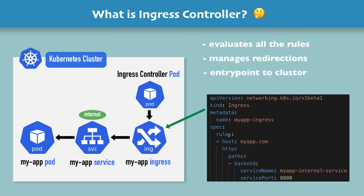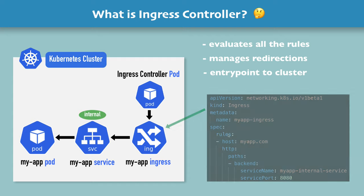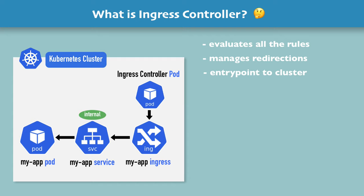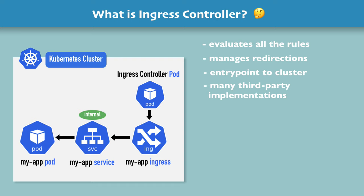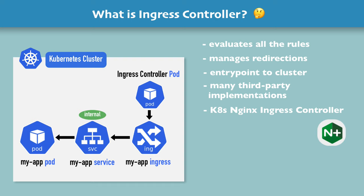It will evaluate all the rules and decide which forwarding rule applies for that specific request. To install the ingress implementation in your cluster, you have to decide which of many third-party implementations to choose from — I'll put a link to the full list in the description. There is one from Kubernetes itself, which is the Kubernetes Nginx ingress controller, but there are others as well. Once you install an ingress controller in your cluster, you're good to go — create ingress rules and the whole configuration will work.